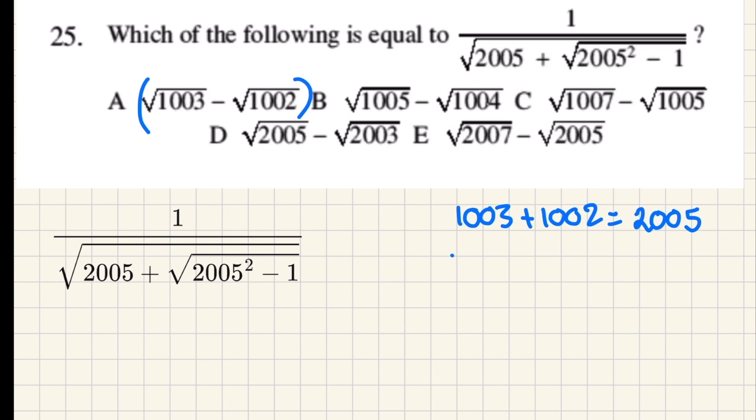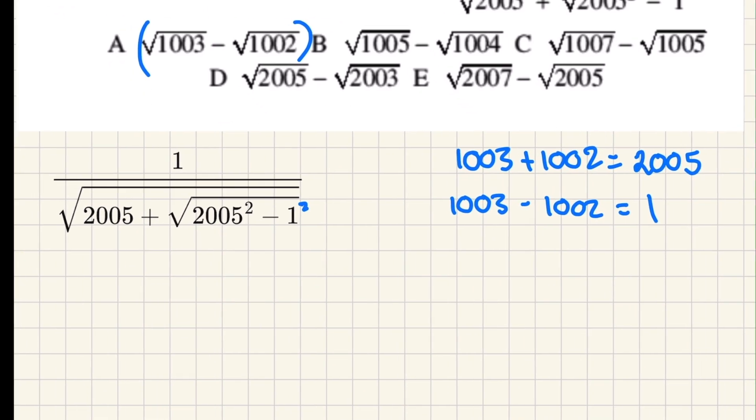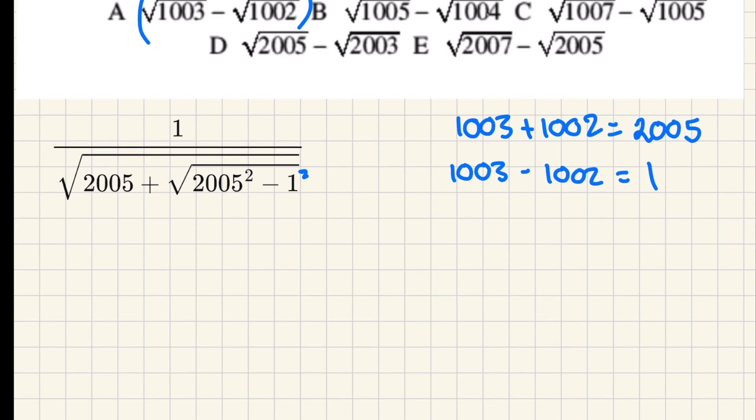But then if you look at the difference, the difference is one. Now this is quite interesting because the 2005 turns up here, and then we have one, and one is also the same as one squared. I just started thinking, okay, this is probably the one, but let's show why it's definitely the solution.